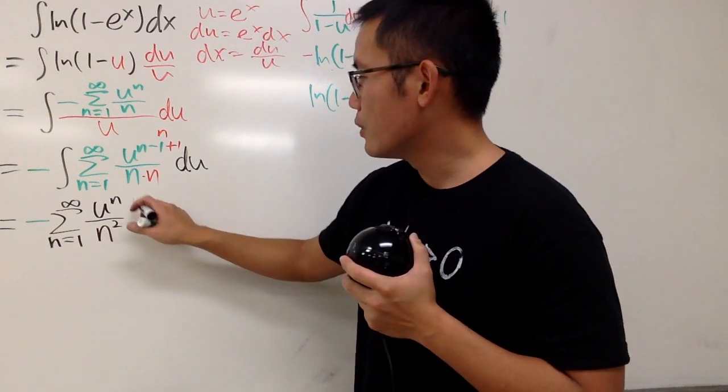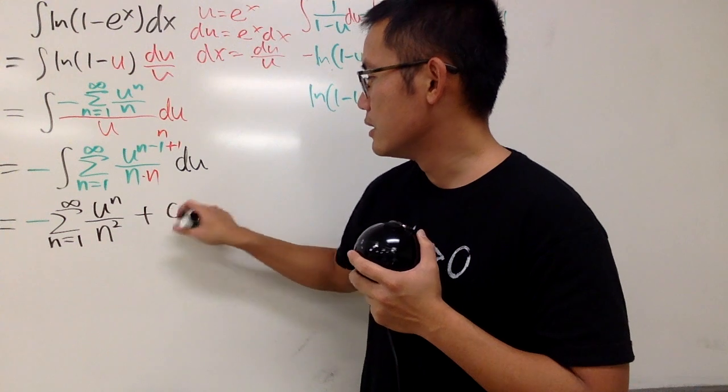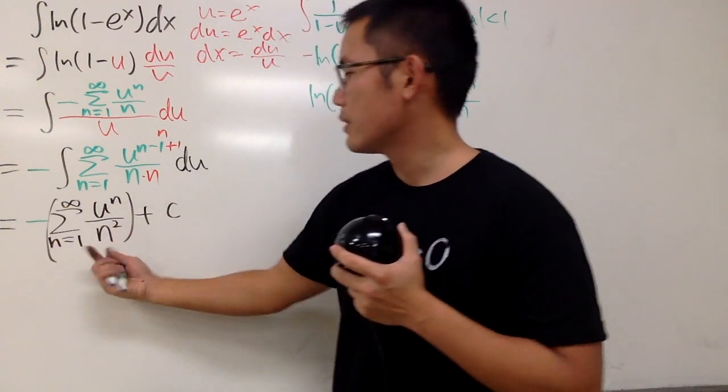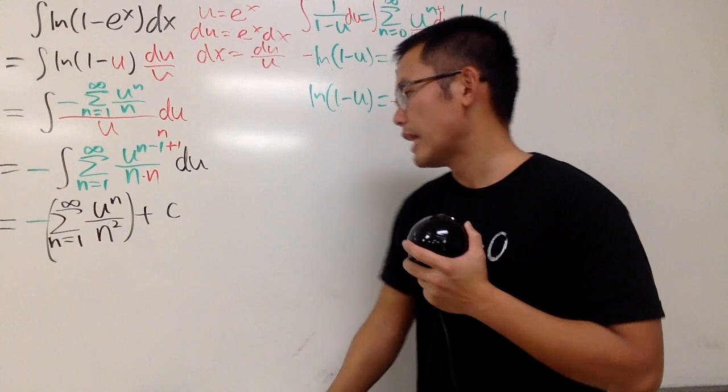And that's pretty much it. And on the outside, though, we have plus c. So, just make sure that you have this only, right? The plus c is outside of the summation, like that.